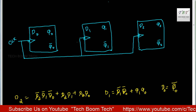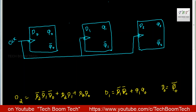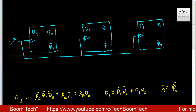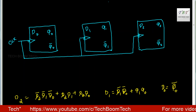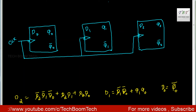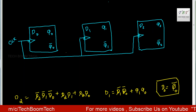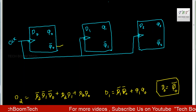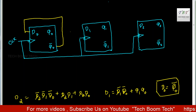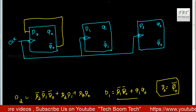Here we have 3 D flip-flops and a clock signal. D0 is equal to Q0 bar. So here I will connect D0 to Q0 bar. And D1 is equal to Q1 bar Q0 plus Q1 Q0 bar.